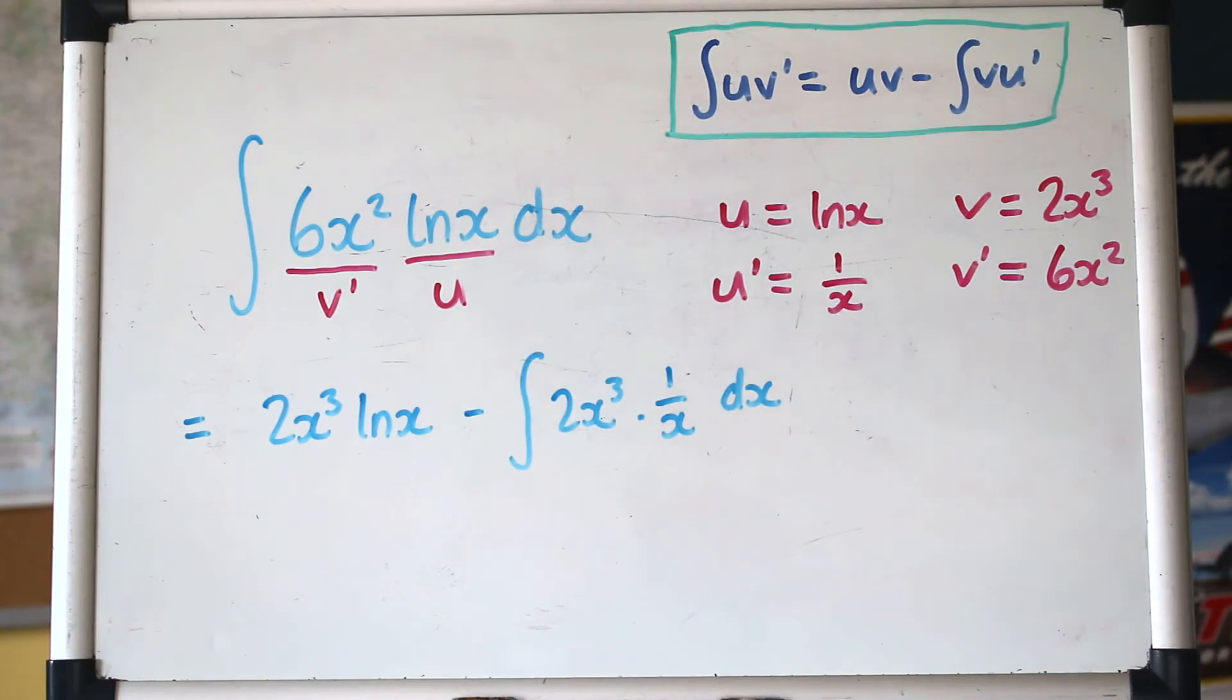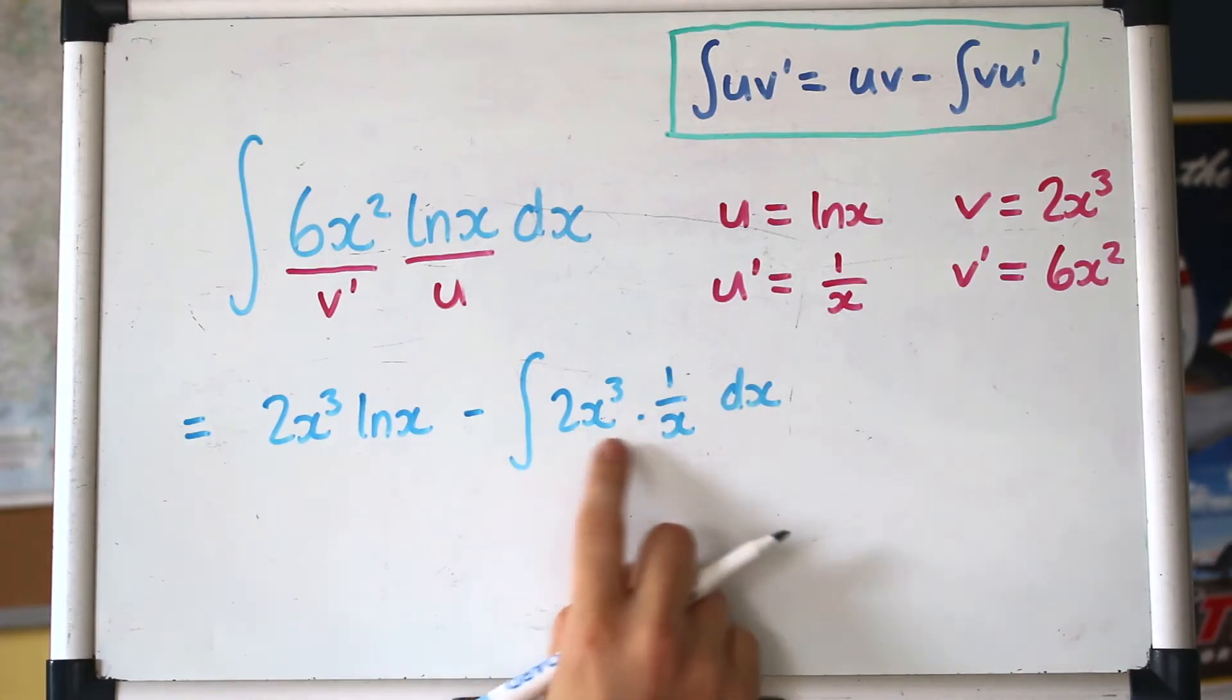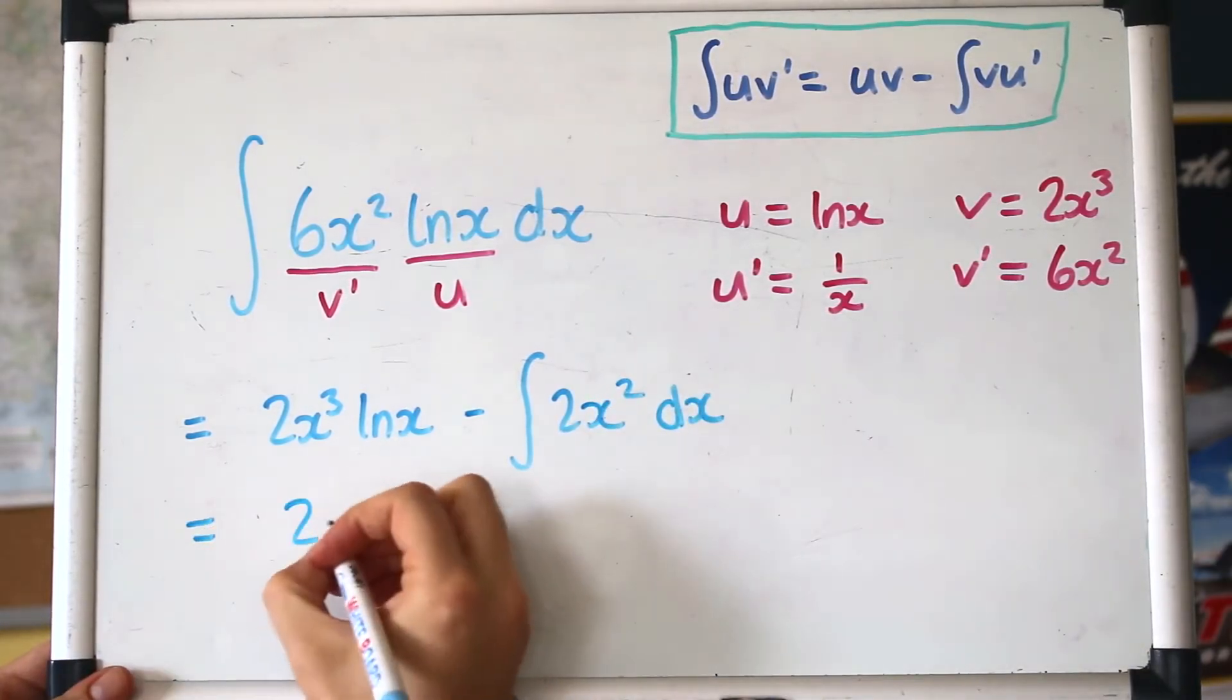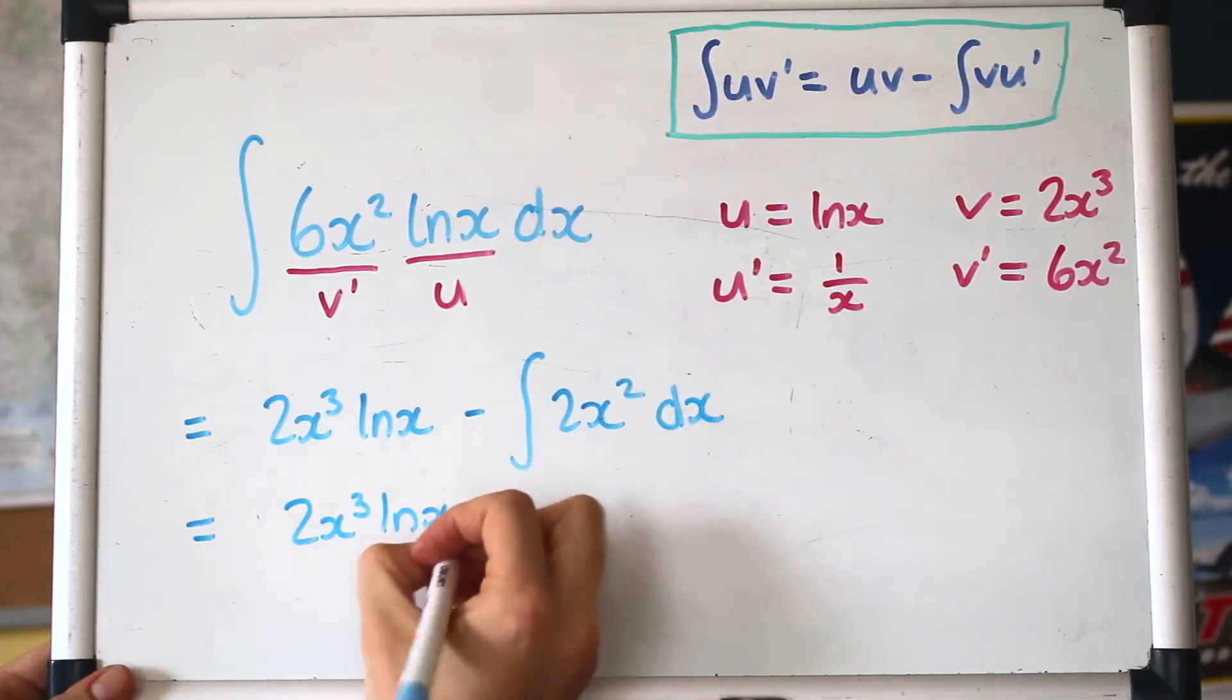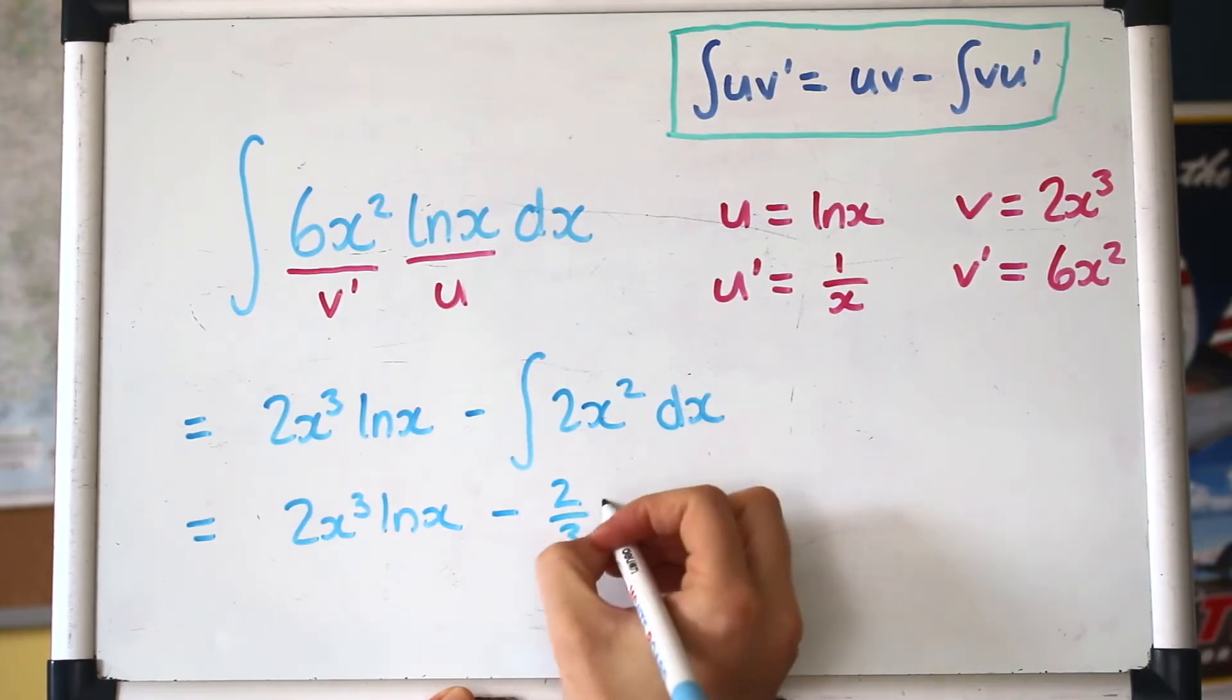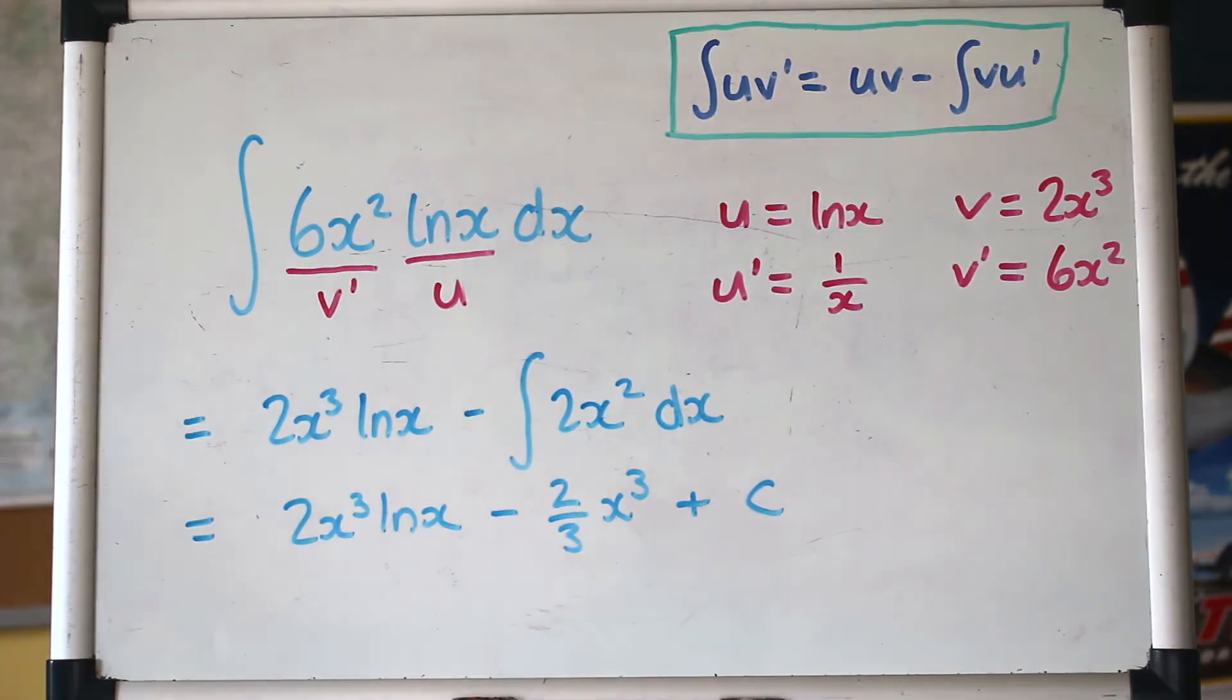So the idea behind integration by parts is to force it into a form where what you've got left to integrate should be okay. So we can simplify this first. We're dividing by x so we can simplify that to 2x squared. And so that stays the same at the front. And now we want to integrate that. Again, it should be a straightforward integration. And because this is indefinite, there are no limits, so we need the plus c. Great. Hope that's clear. If you need to rewind and have a go at that yourself, please do. Otherwise, we'll do another example.